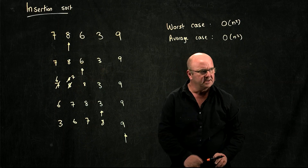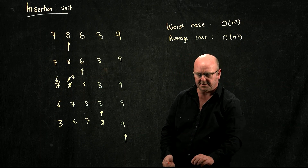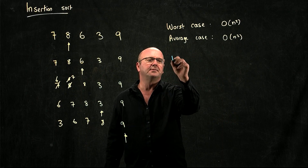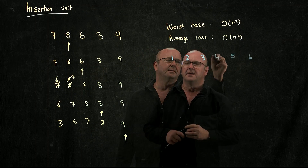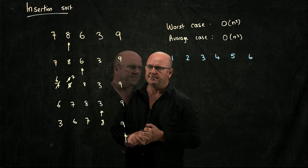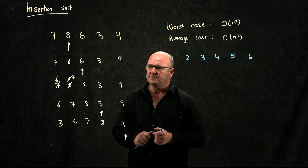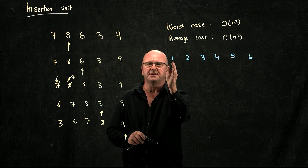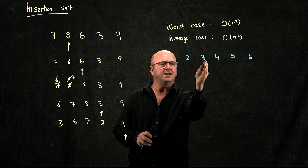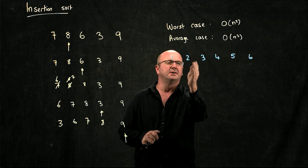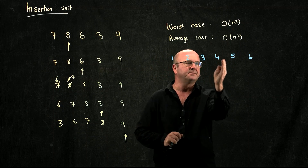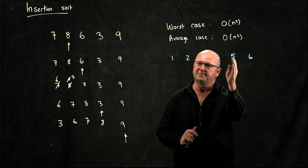But what happens to the insertion sort if our list is already sorted? How many comparisons do we have to do? We only have to do n comparisons. We take the two out, compare it to the thing before it — it's sorted, so we leave it. We take the three, compare it to the thing before it. We take the four, compare it to the thing before it. We take the five, compare it to the thing before it. We take the six, compare it to the thing before it.